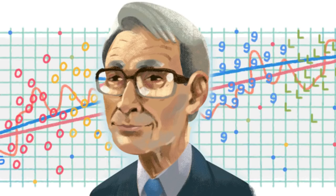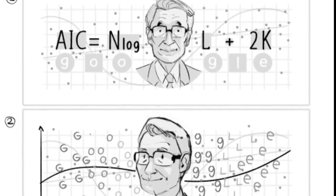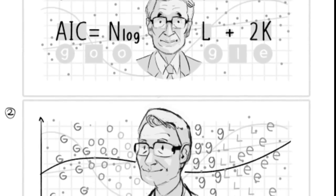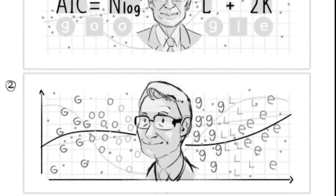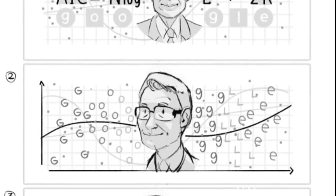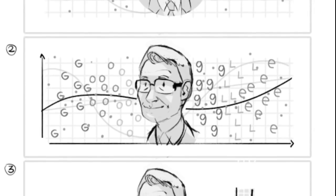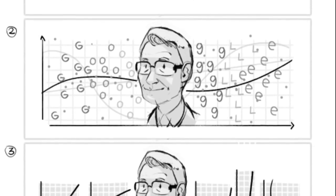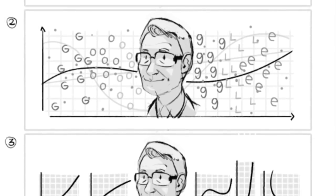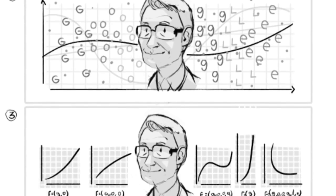For Dr. Akaike, experience was core to creativity. For example, to get a direct feel of random vibrations, he bought a scooter and rode it around Mount Fuji. This first-hand experience helped him differentiate between the vibrations of riding on normal and heavily tracked roads.